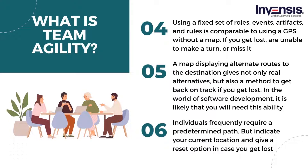If you get lost, are unable to make a turn, or miss it, you are lost. A map displaying alternate routes gives not only real alternatives, but also a method to get back on track. In the complicated world of software development, it is increasingly likely that you will need this ability. This is what the lean-based agile team performs — Scrum should be used within the framework of Lean.